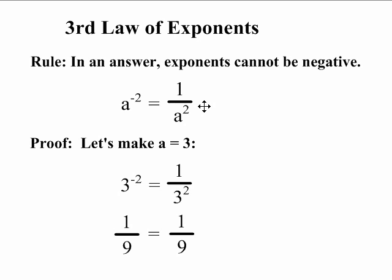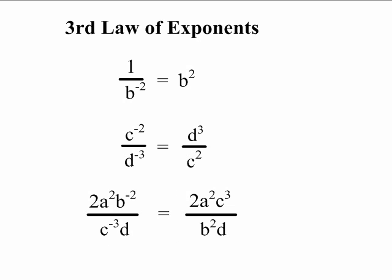Let's look at some more examples. In the first example, 1 over b to the negative 2 is equal to b squared by the third law of exponents. This means that even if the term with the negative exponent is in the denominator, we can still do this trick. We have to move it up into the numerator. Since there is nothing left in the denominator, b squared is over 1 and can be written just as b squared.